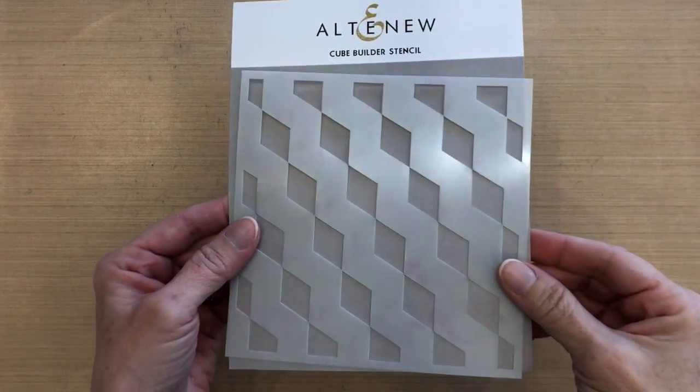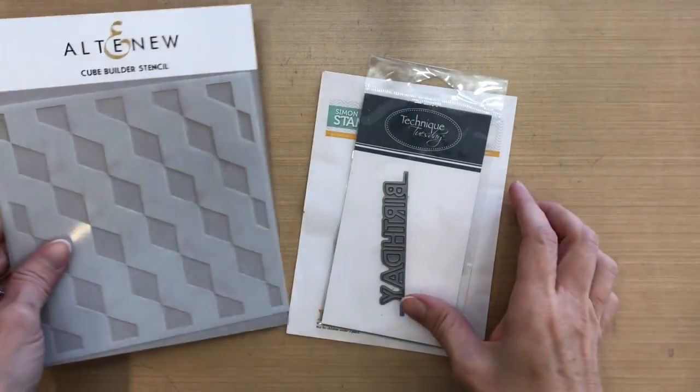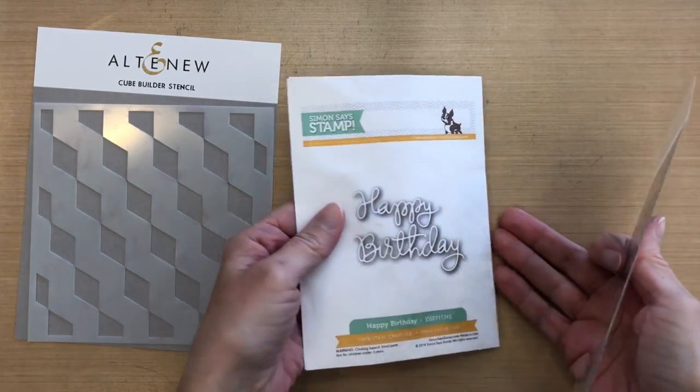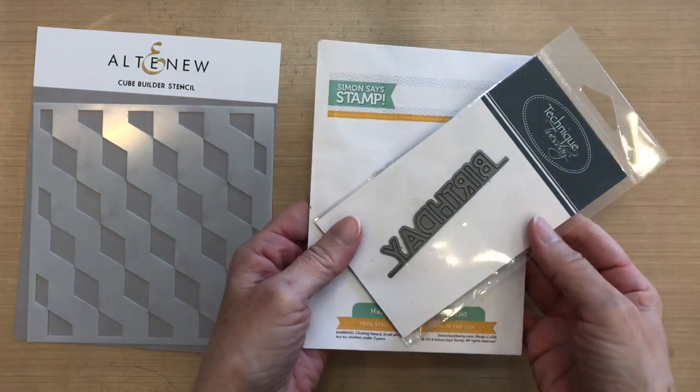Here is the stencil. I know it doesn't look like a cube, but it's a really cool stencil. I'm also using this Technique Tuesday die and the Simon Says Stamp happy birthday die.